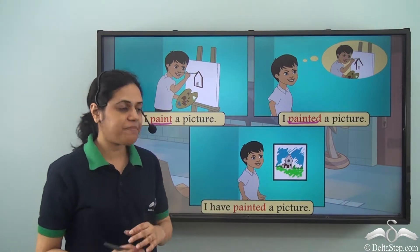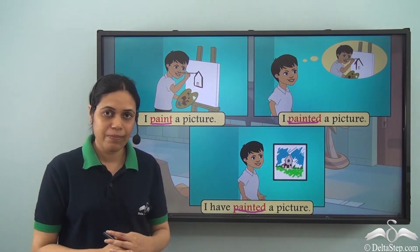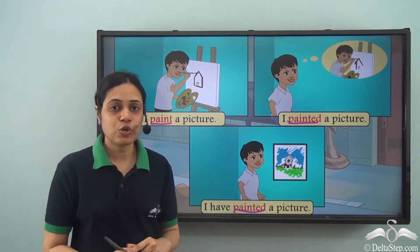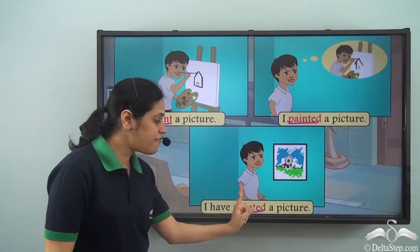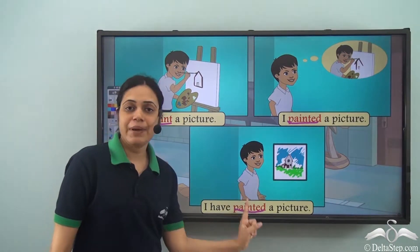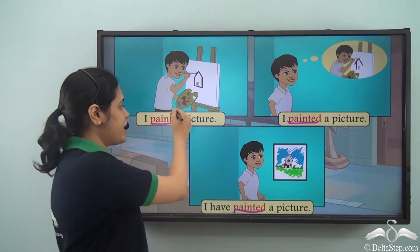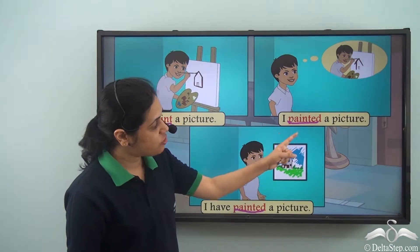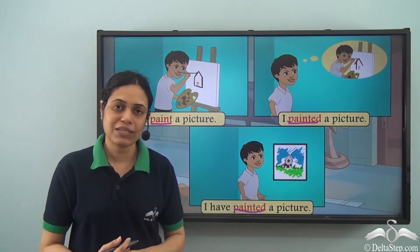'I have painted a picture.' In this sentence, painted is the verb but here it is present perfect tense, showing that the action is complete. In this case, painted is the past participle form of the verb. So we have present tense, past tense, and past participle form. The past and the past participle form of the verb are the same in this case.